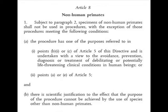So if a certain type of monkey was looking like it was going to become extinct, you could experiment on it in order to try and save the species as a whole. And point B at the bottom reads: there is scientific justification to the effect that the purpose of the procedure cannot be achieved by the use of species other than non-human primates. So if there is an alternative to using monkeys, you have to use it — that's all they're saying.